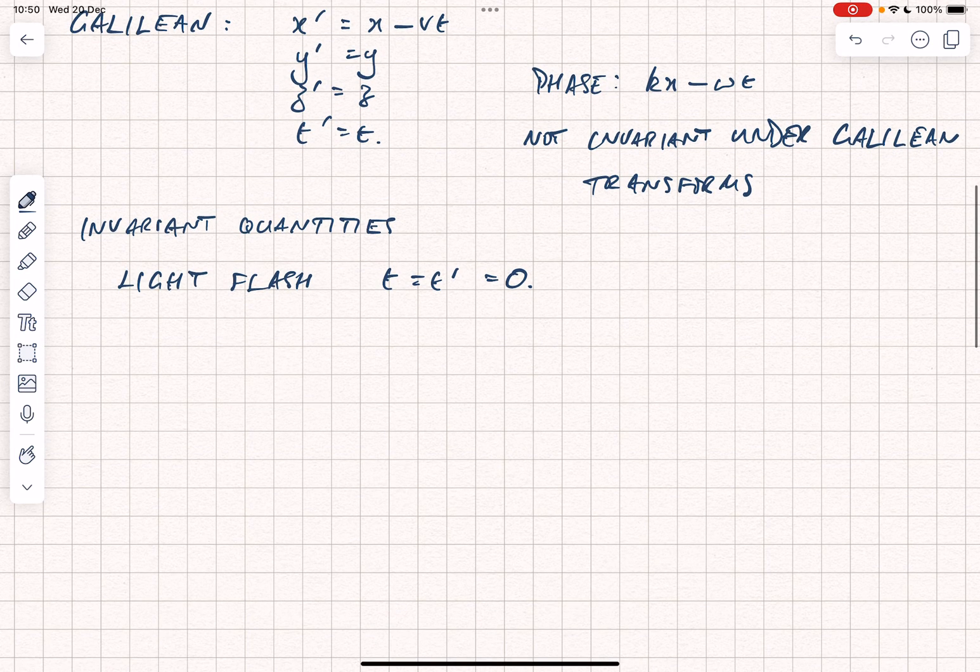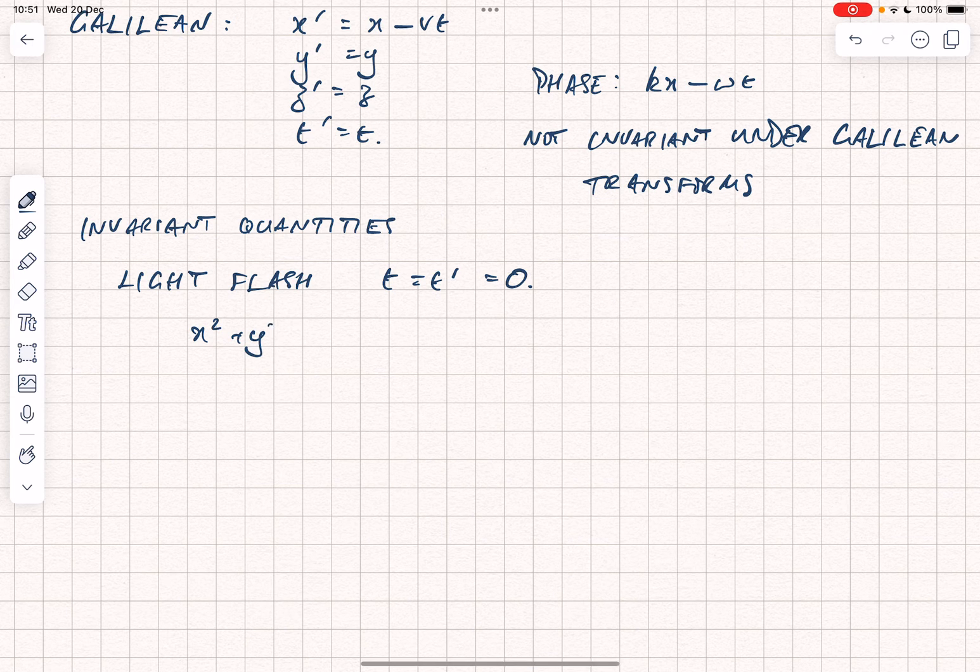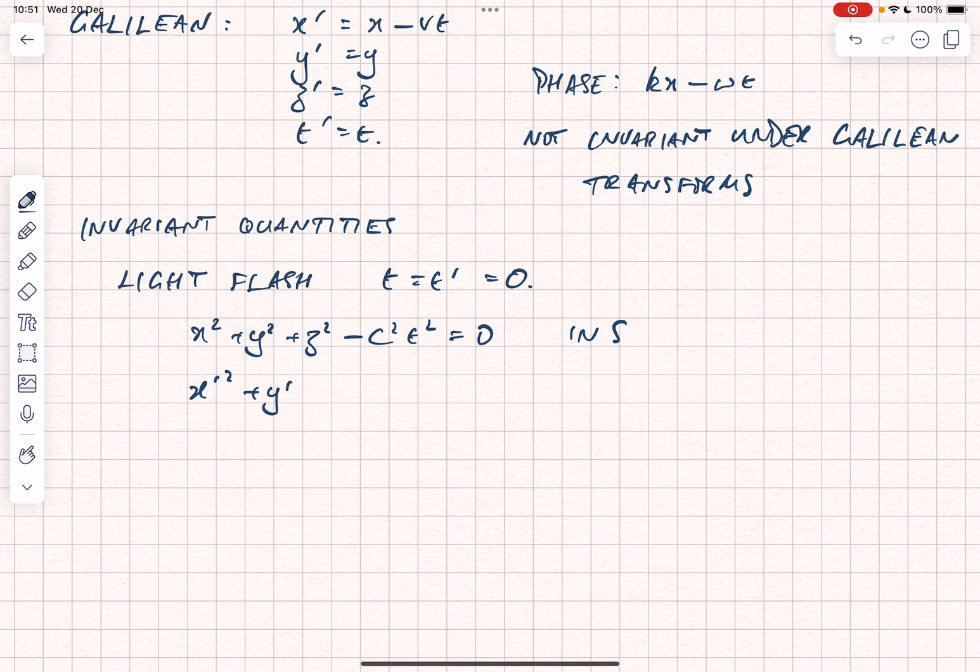The wave front at a time in the future is going to be given by x squared plus y squared plus z squared minus c squared t squared is equal to zero, because that's where it was at the beginning. And that's in the frame s. And in frame s prime, it's going to be given by x prime squared plus y prime squared plus z prime squared minus c squared t prime squared. And that must also equal zero, because it was observed at the same point. They were coincident.